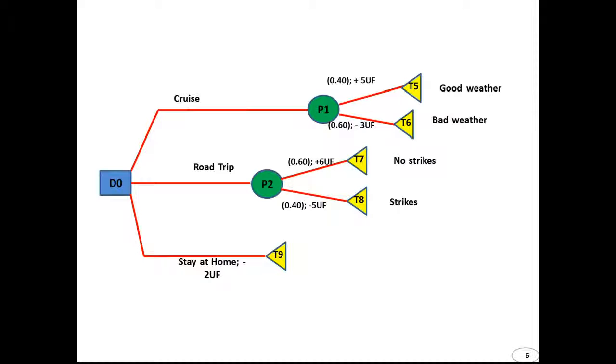Here we have, as you can see, we put these alongside the paths. 40% probability for plus 5 units of fun. 60% probability minus 3 units of fun for good weather, bad weather respectively. And the same way for strikes and no strikes. And stay at home we have minus 2 units of fun. And you can see now the numbering I just go from 1, 2, 3, 4, 5, 6, 7, 8, 9.